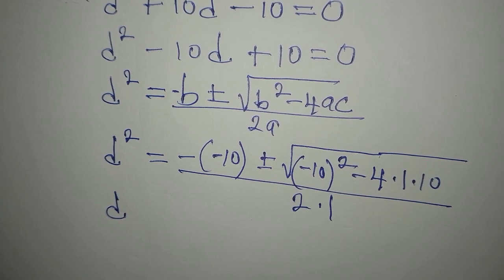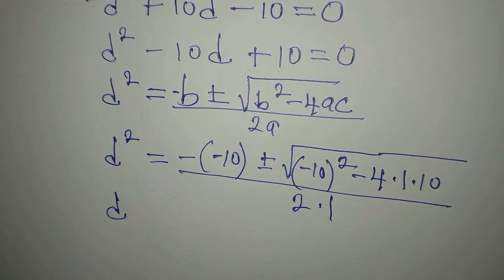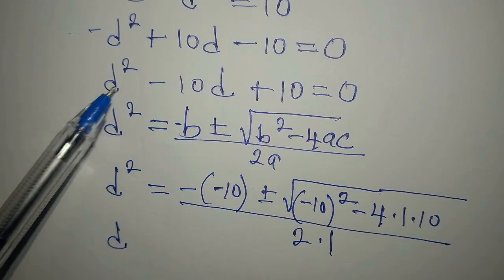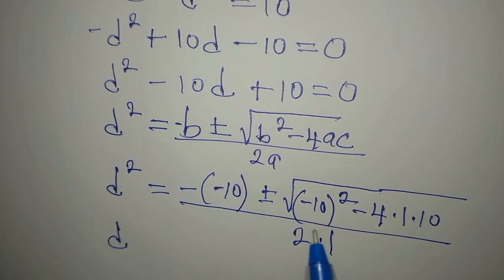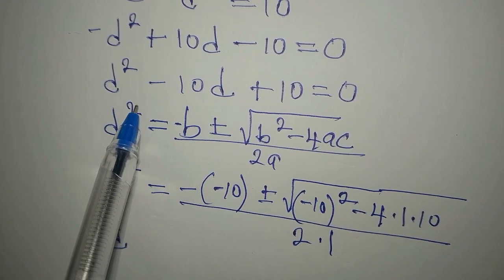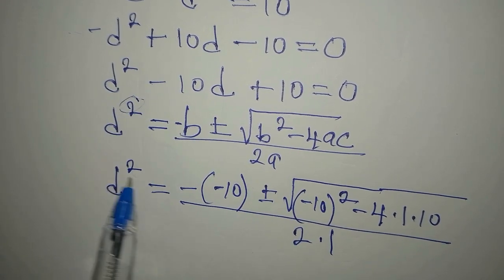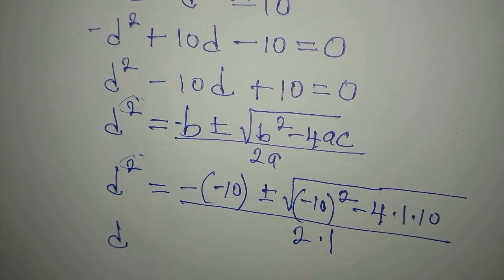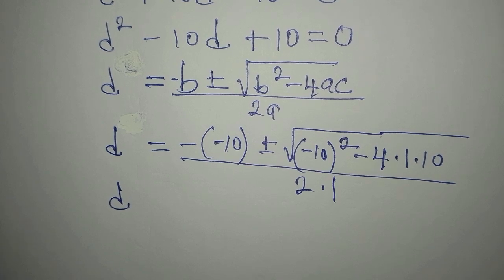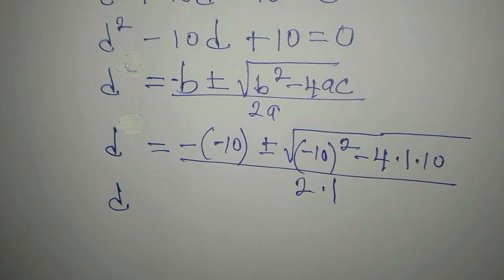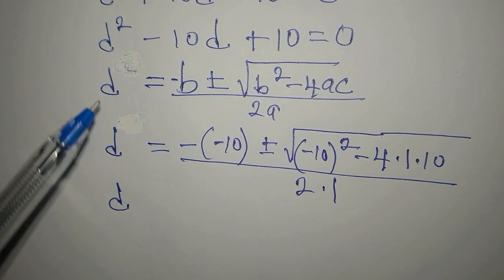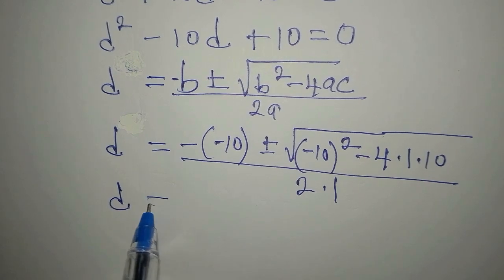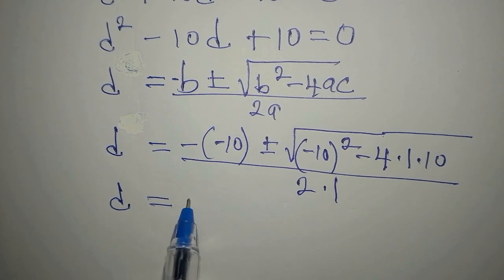Wait — I incorrectly wrote d squared in the formula; the formula has just d, not d squared, so that squared is not there. Correcting that: d equals negative of negative 10 — so positive 10 — plus or minus the square root of the discriminant, divided by 2.